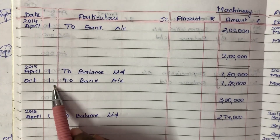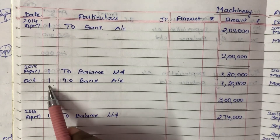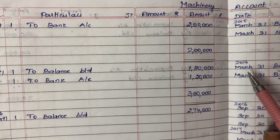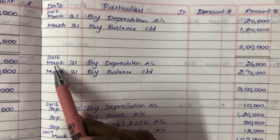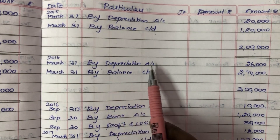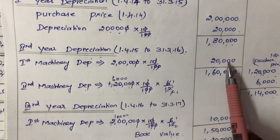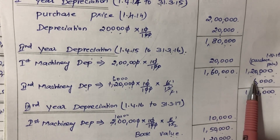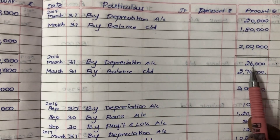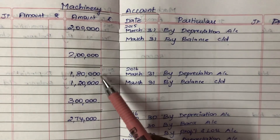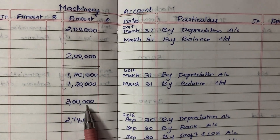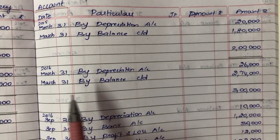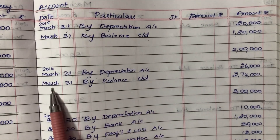In this year we also purchase the second machinery on October 1, so to bank account Rs. 1,20,000. Depreciation on 2016 March 31 by depreciation account: first machinery Rs. 20,000 plus second machinery Rs. 6,000 equals Rs. 26,000 total. Balance carry down: Rs. 3,00,000 minus Rs. 26,000 equals Rs. 2,74,000. Total both sides Rs. 3,00,000. Balance brought down 2016 April 1: Rs. 2,74,000.